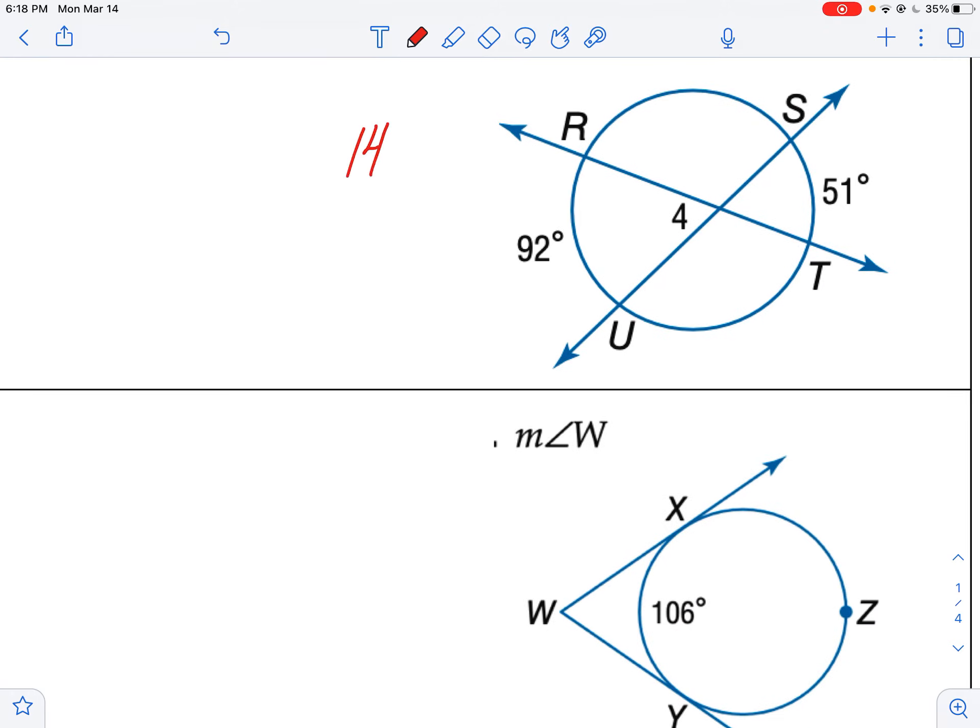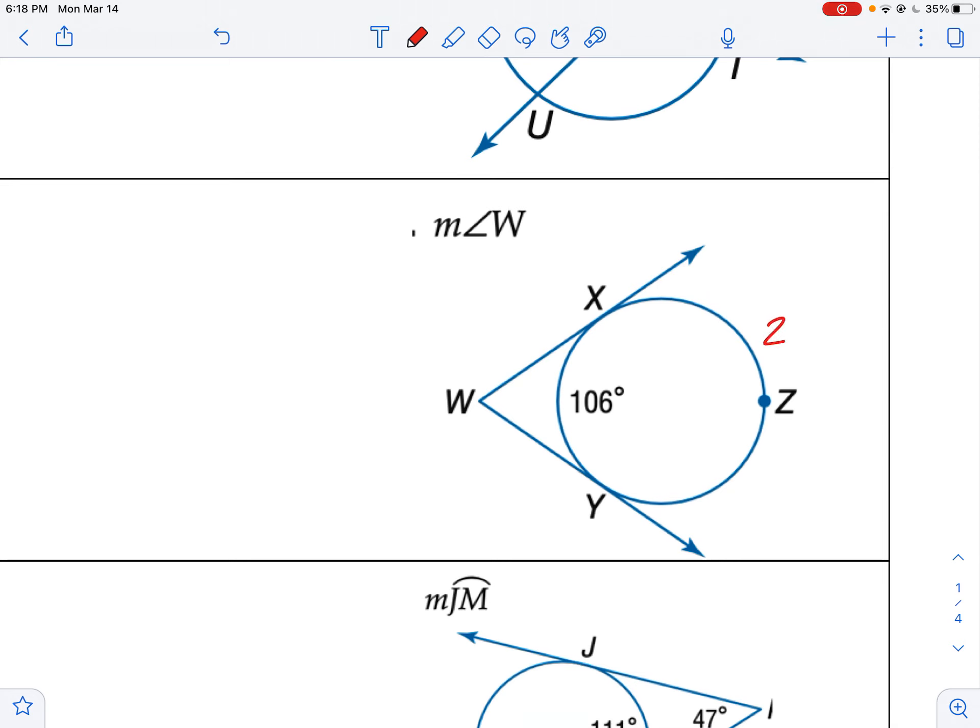All right, so here we should have 143 divide by 2 is 71 and a half. Here that's 106, which means this is 254. 254 minus 106 is 148, which means that's 74.